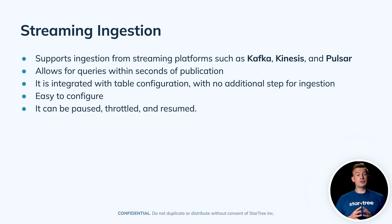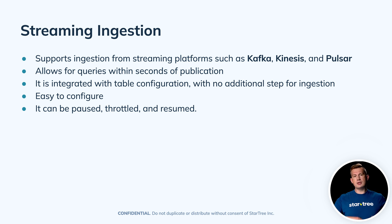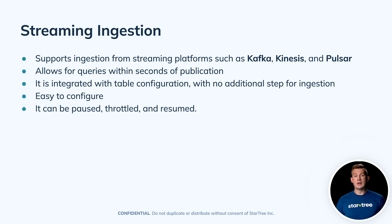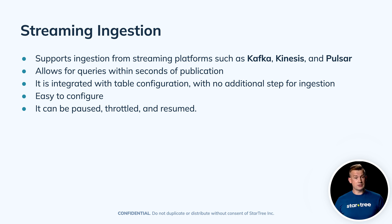Moving on to streaming ingestion. Things work slightly differently here. With batch ingestion, segments are created outside of the Pinot cluster. With streaming ingestion, each individual segment will include a consumer component that interacts with the underlying streaming solution like Kafka, Kinesis, or Pulsar. The cool thing about streaming ingestion is that data will be available immediately as it is consumed from a streaming source.